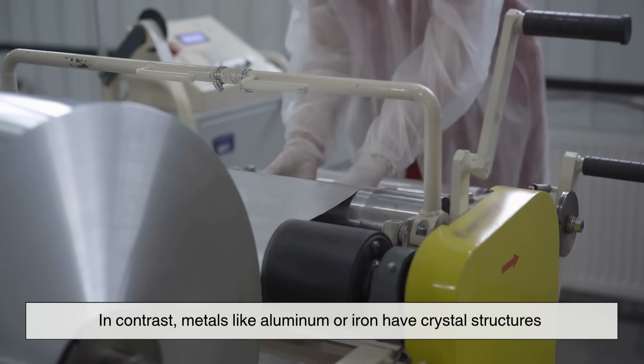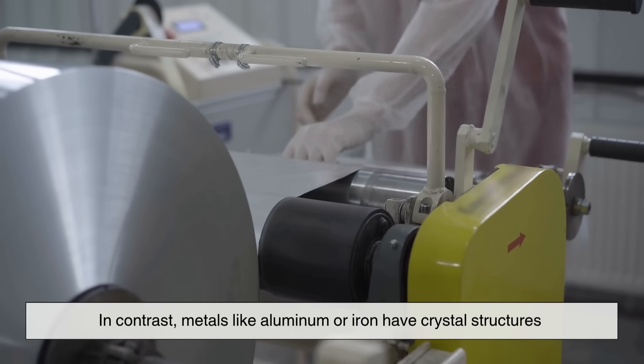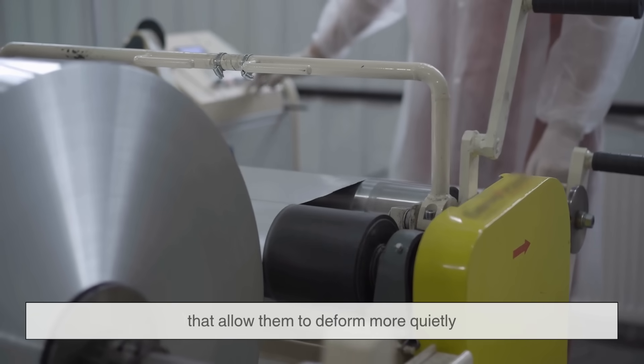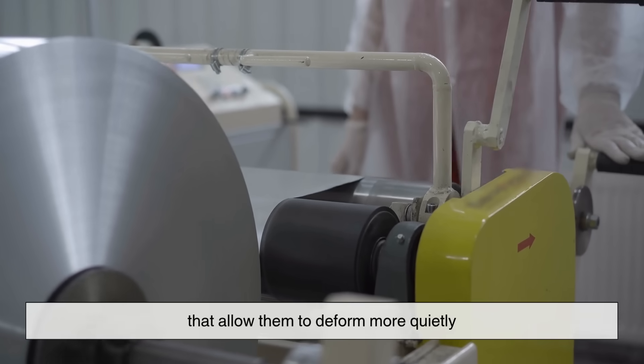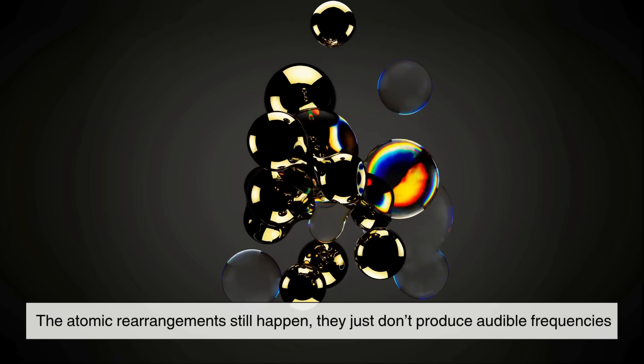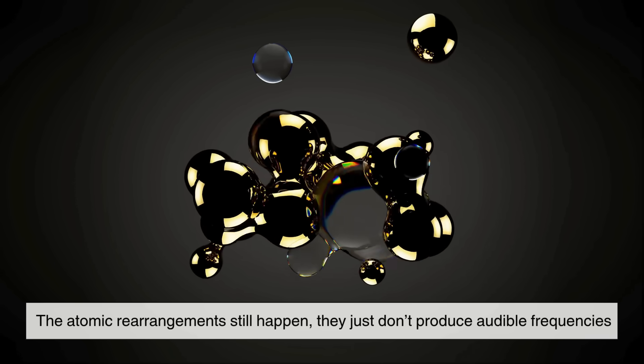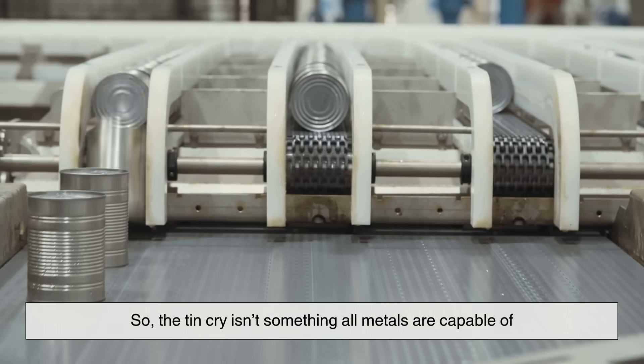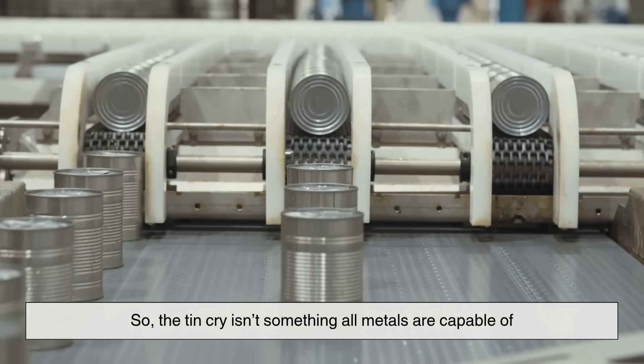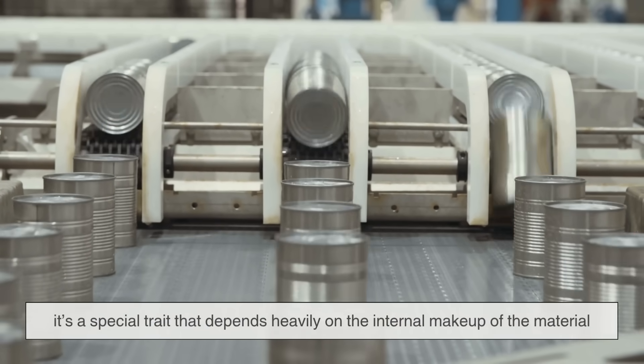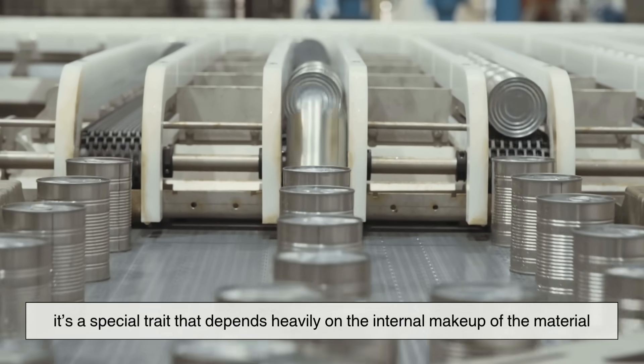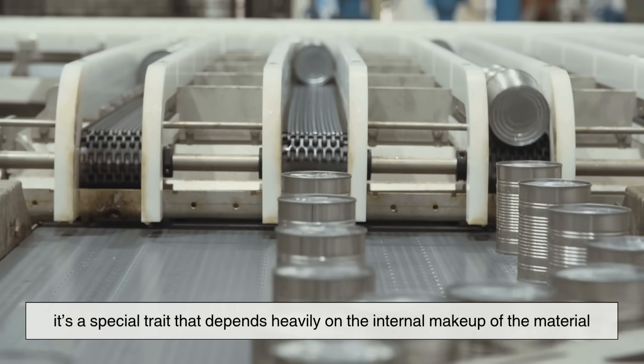In contrast, metals like aluminum or iron have crystal structures that allow them to deform more quietly. The atomic rearrangements still happen, they just don't produce audible frequencies. So the tin cry isn't something all metals are capable of. It's a special trait that depends heavily on the internal makeup of the material.